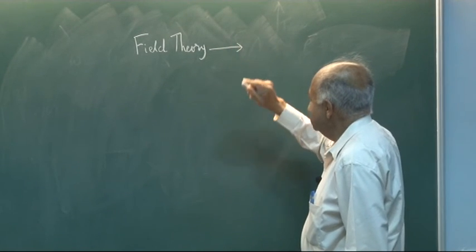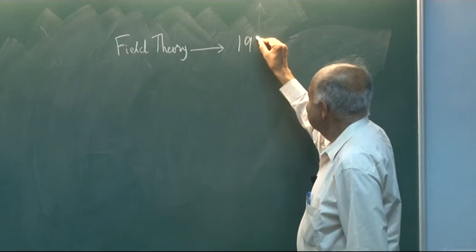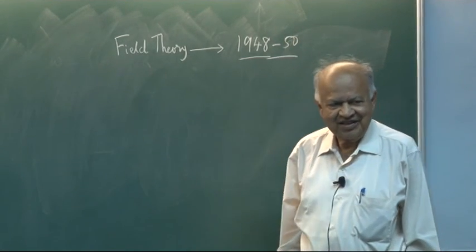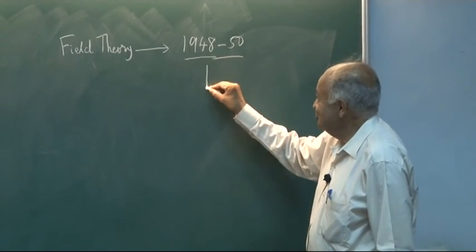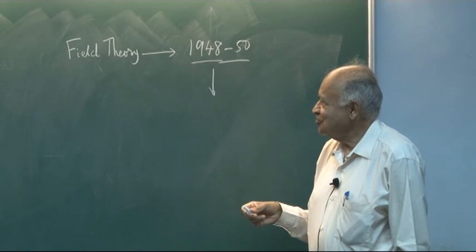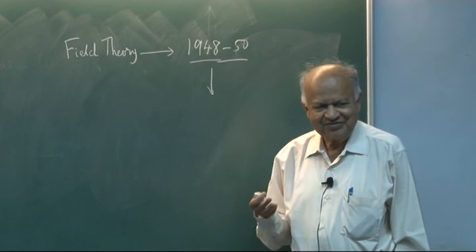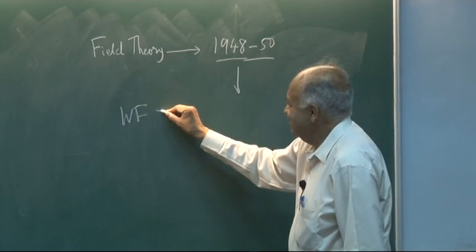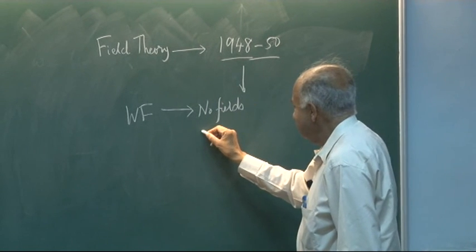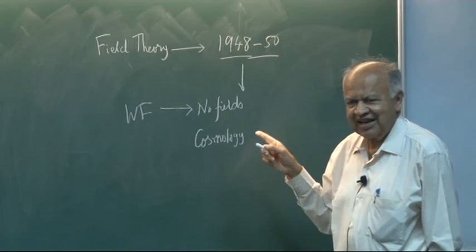Theory has gone beyond what you call electrodynamics. Electrodynamics was a problem around 1948 or so when most of these problems were being handled. Afterwards, it went to gauge theories and this is all field theoretical approach. So the question is if you want to say that field theory is not needed and you invoke Wheeler-Feynman theory. So the Wheeler-Feynman theory says no fields, but you need a cosmology.